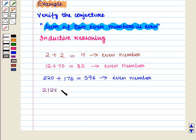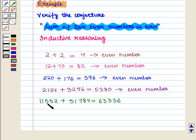2124 plus 3256 is equal to 5,380 which is an even number. 11,552 plus 51,784 is equal to 63,336 which is also an even number.